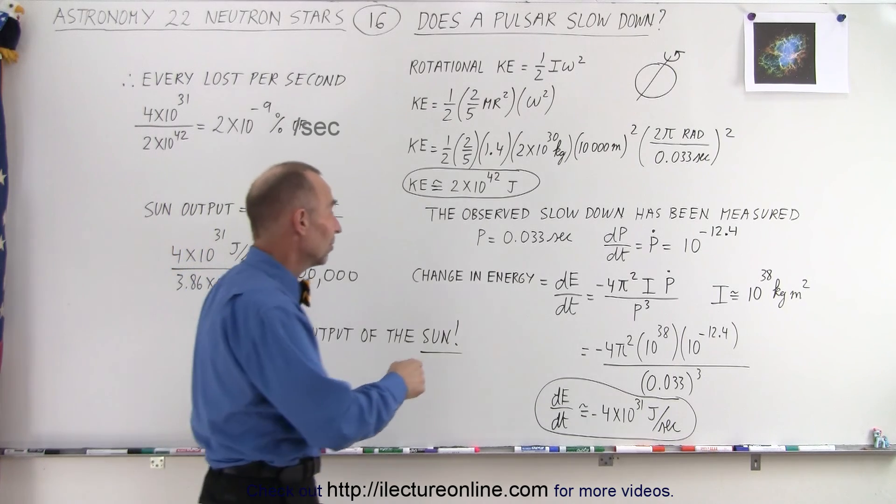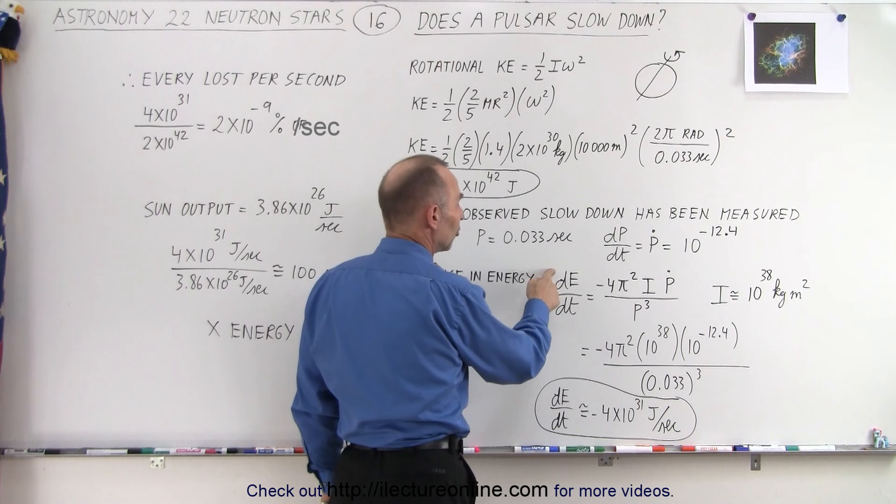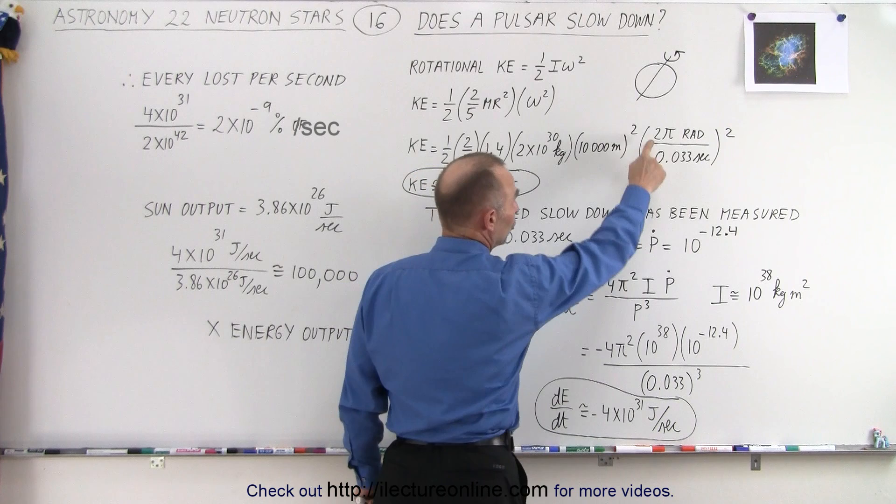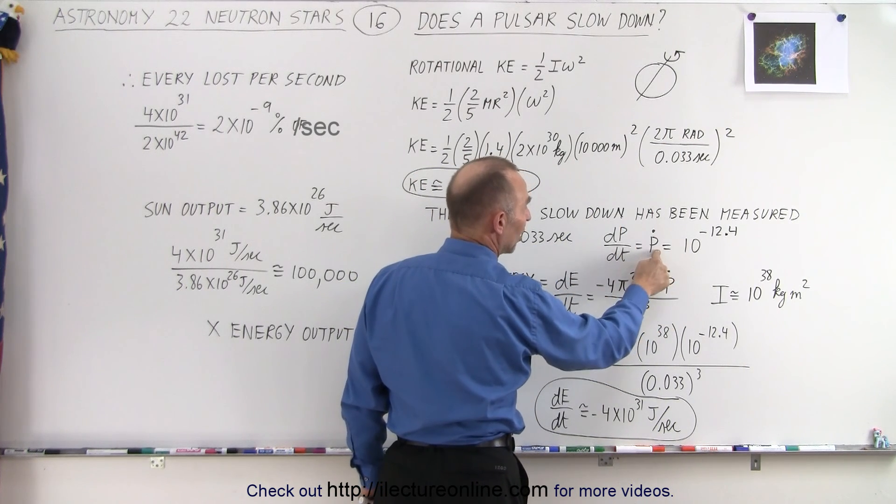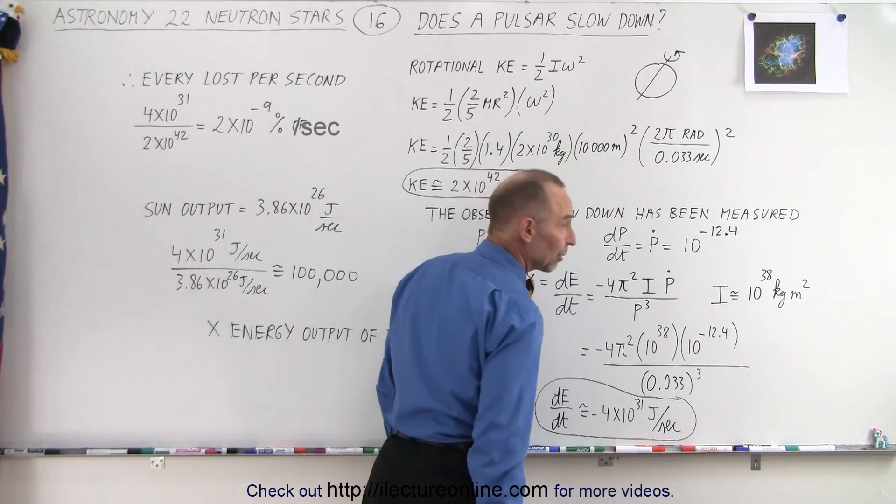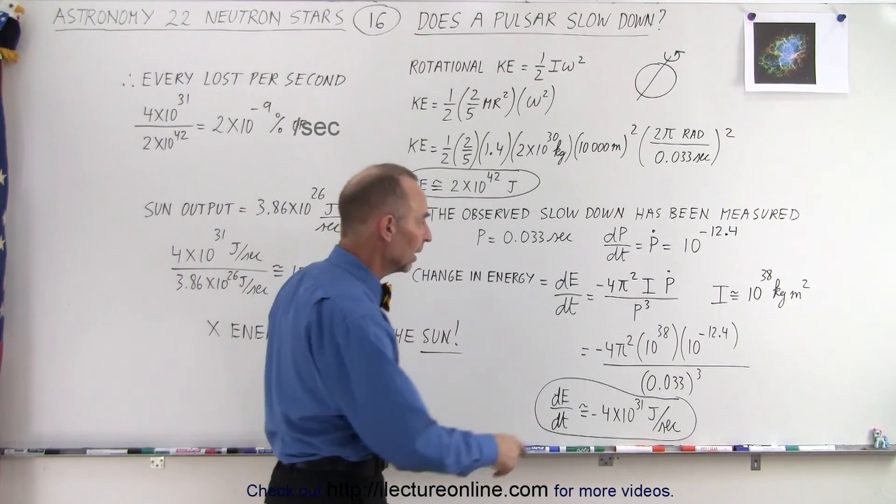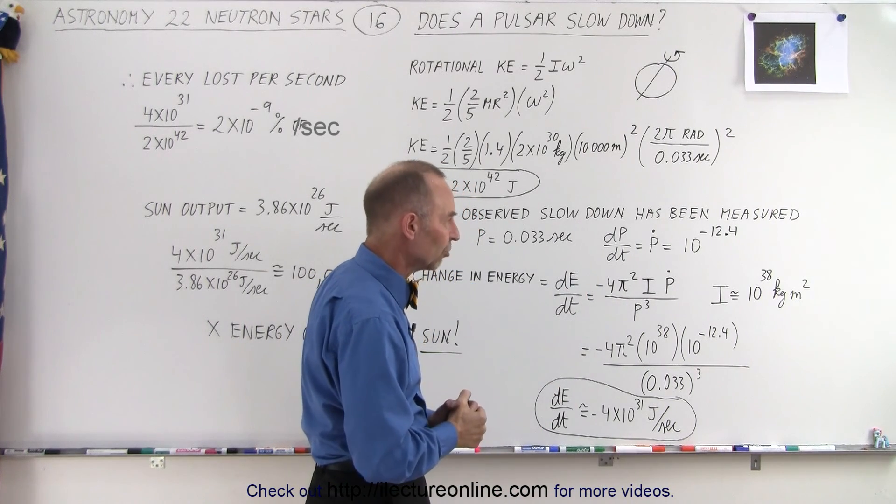We can figure out the change in kinetic energy by taking the difference of energy with respect to time, which is minus 4π squared times the moment of inertia times the change in the period divided by the period cubed. When we take the derivative of 1 over P squared, we get 1 over P cubed. That's where the negative comes from, because it's a slowdown or change in the energy in a negative direction.